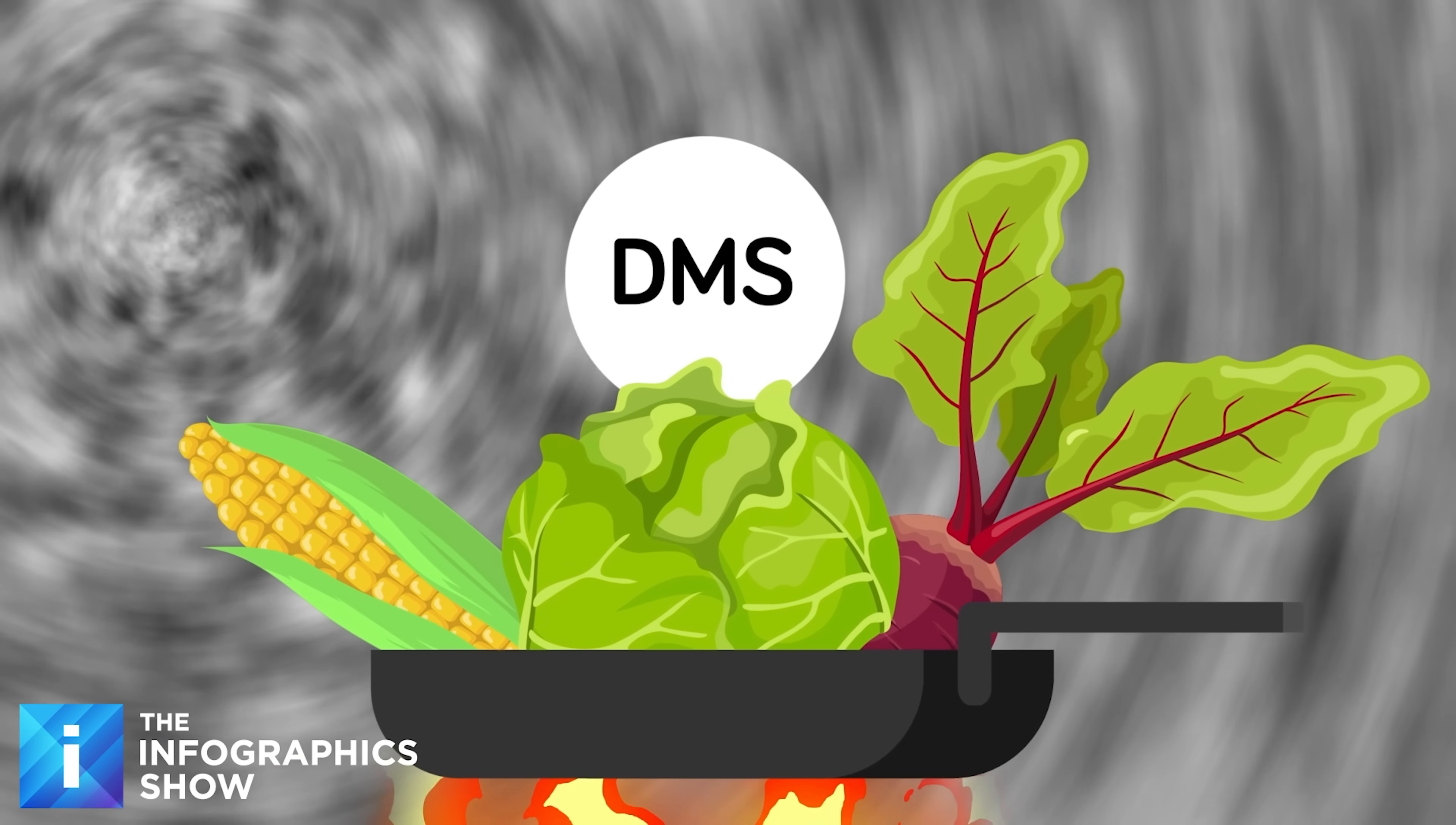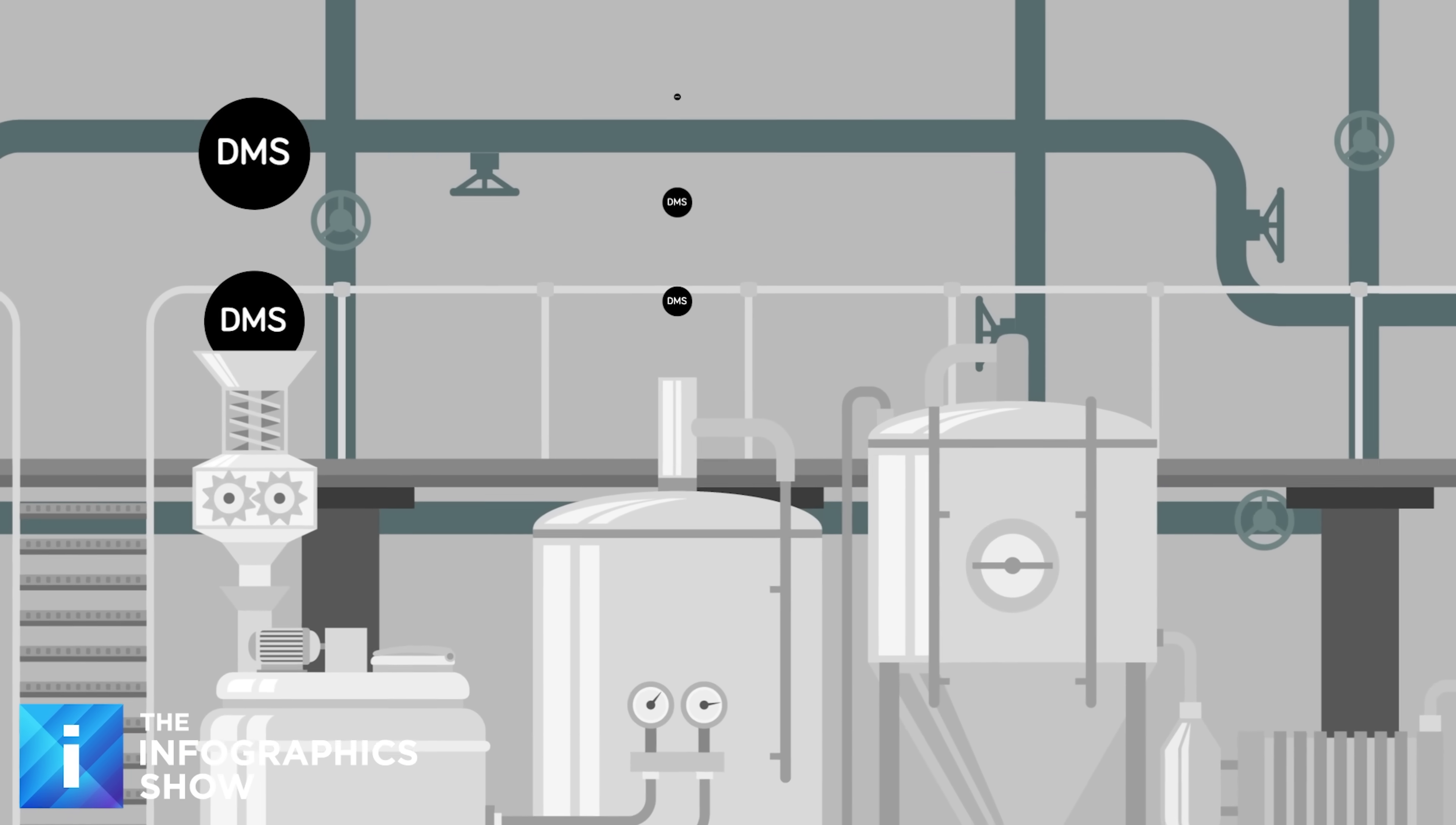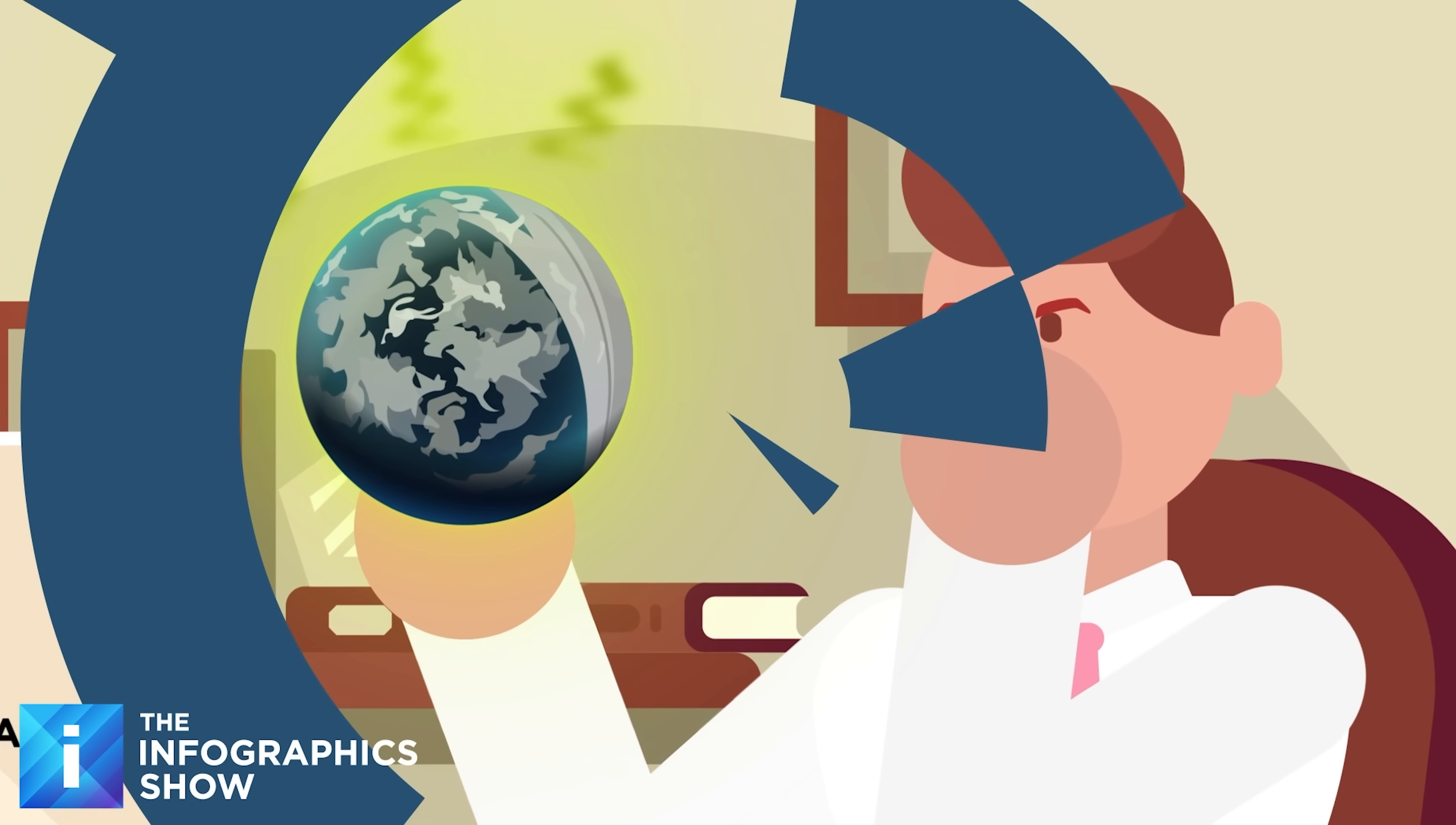It's generally created by the heating of organic material including maize, cabbage, beets, and seafood. It can also be produced by bacteria contaminating breweries- this is where most people will encounter it. But it can be produced by natural sources as well, particularly in the biological processes of phytoplankton. So we might have a stinky planet on our hands, but does it mean life?